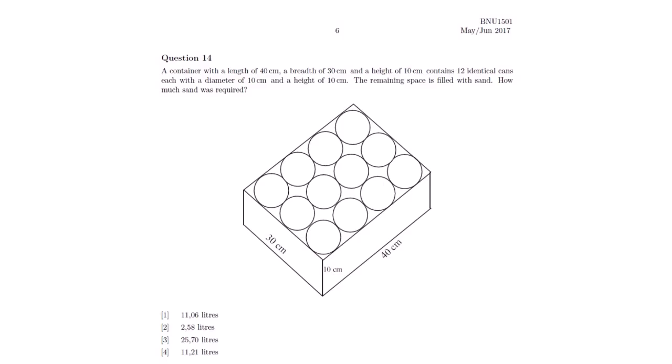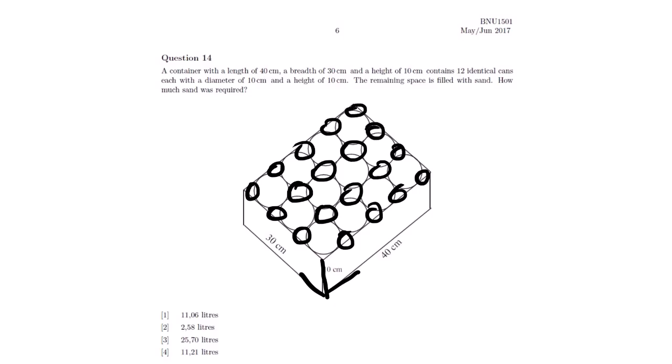So we have this shape here, which has 12 cans. You can see 12 cylinders inside this shape. And then after filling these cylinders, we have the spaces here between the cylinders. That is where the sand was poured. We want to know the volume of the sand poured inside these spaces.